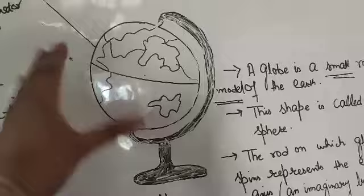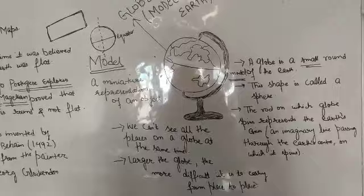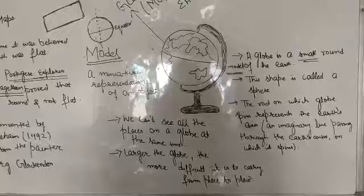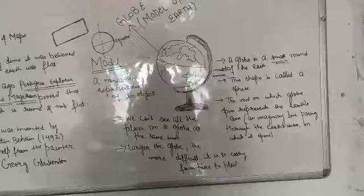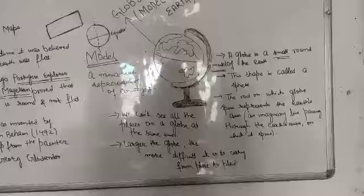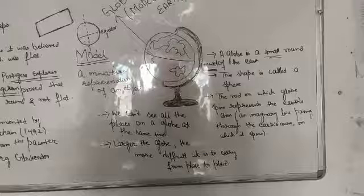I have underlined the word 'small'. A globe is a small round model of the earth. Does it mean we can make the globe just so much size, we can't make it bigger or smaller? Absolutely, we can make the globe small or bigger. But the word 'small' means that in comparison to the size of the earth, the globe size is very small.